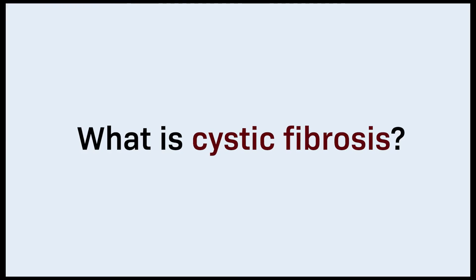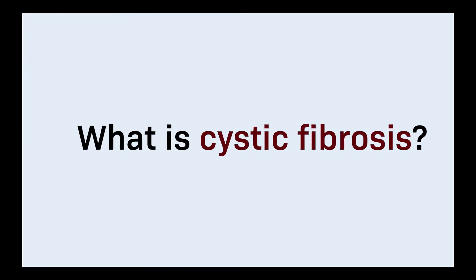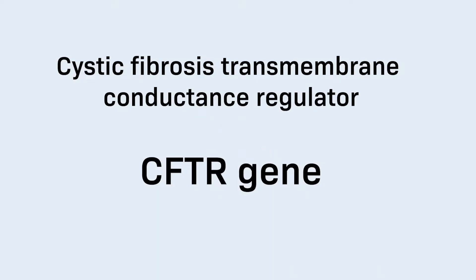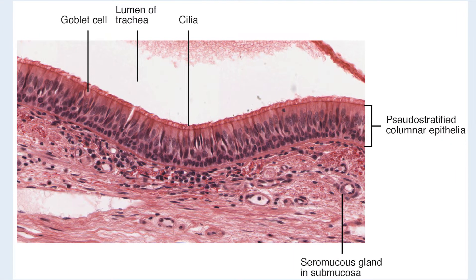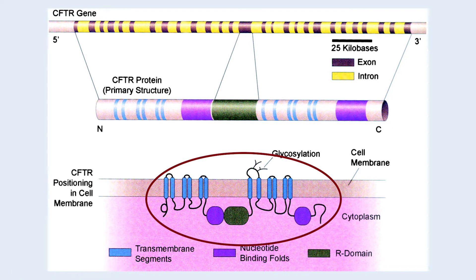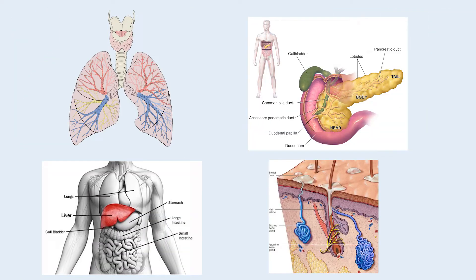So, first of all, what exactly is Cystic Fibrosis? Cystic Fibrosis is a multi-organ disease caused by the mutation of a recessive gene called the Cystic Fibrosis Transmembrane Conductance Regulator, or CFTR gene. This mutation makes the epithelial cells that line organs lose one protein, affecting the functioning of different organs such as the lungs, the pancreas, liver, and sweat ducts.